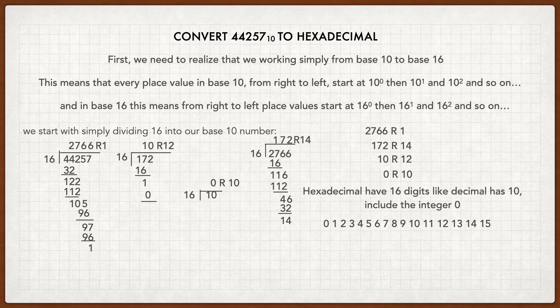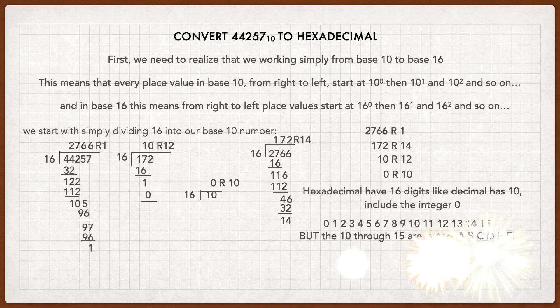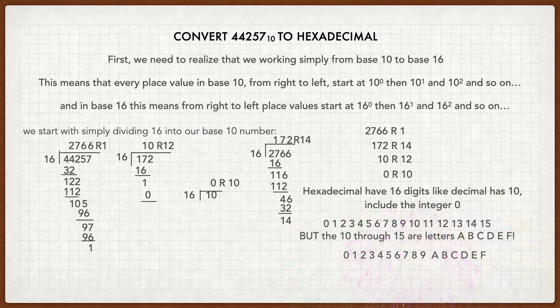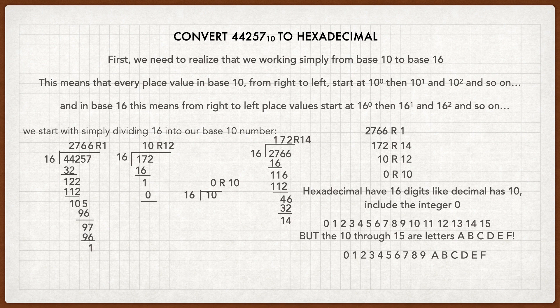But the 10 through the 15 are letters A through F. So the hexadecimal number system actually is 0, 1, 2, 3, 4, 5, 6, 7, 8, 9, A for 10, B for 11 and so on, C, D, E, F.